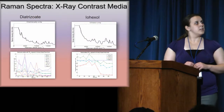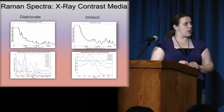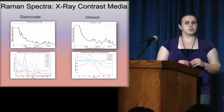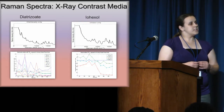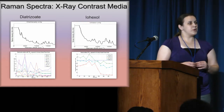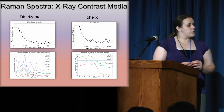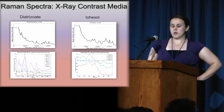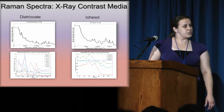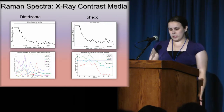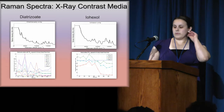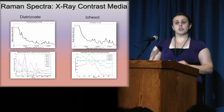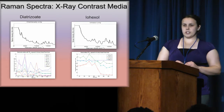Here I'm showing diatrizoate and iohexol on the top, where we took spectra before they were introduced to UV light. Each peak represents vibrational modes. On the bottom, I'm showing the integrated area as a function of time, where we are monitoring the changes of each peak individually. We can see that peaks are decreasing over time, confirming that degradation is occurring.